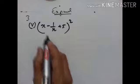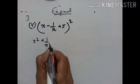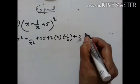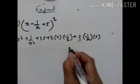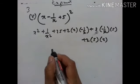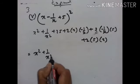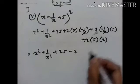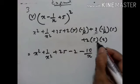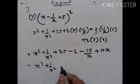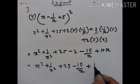Next: (x minus 1 upon x plus 5)² equals first one square plus second one square plus third one square, plus 2 into first into second, plus 2 into second into third, plus 2 into third into first. This gives x square plus 1 upon x square plus 25, minus 2, minus 10 upon x, plus 10x. So the result is x square plus 1 upon x square plus 23 minus 10 upon x plus 10x.